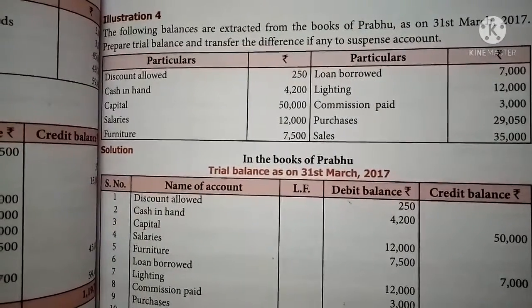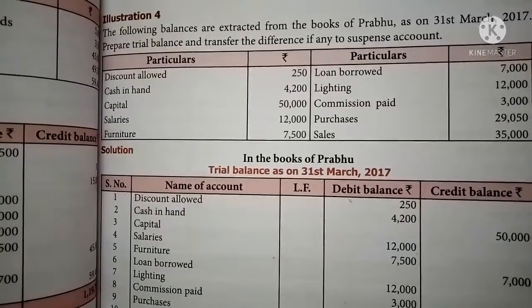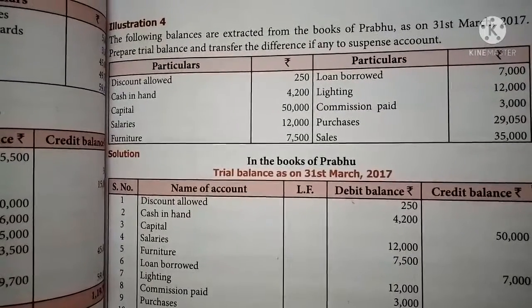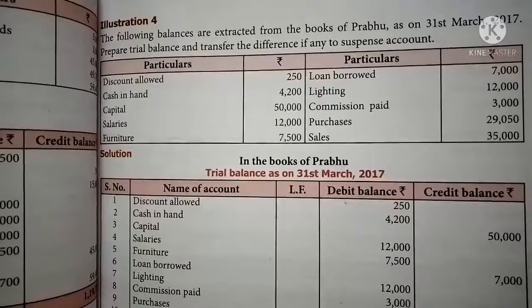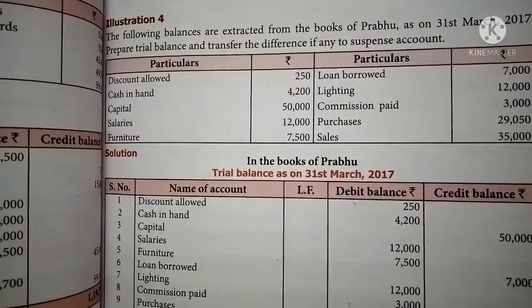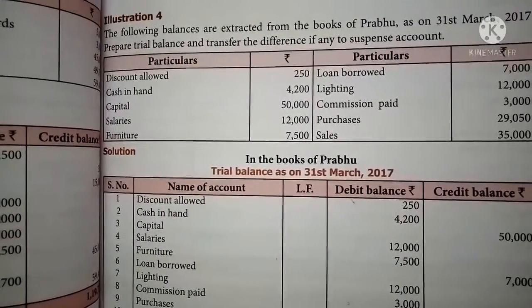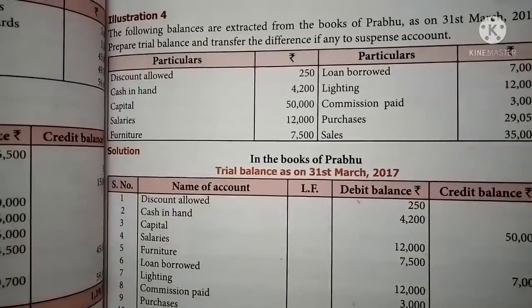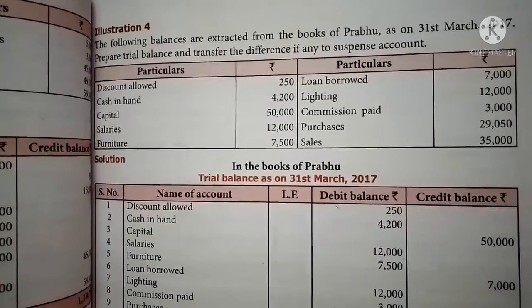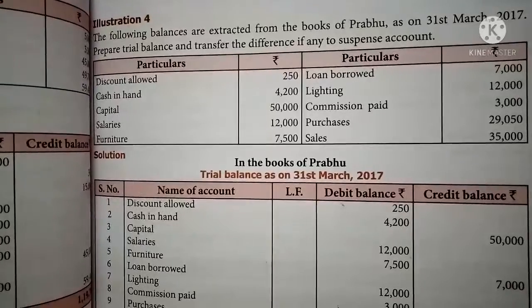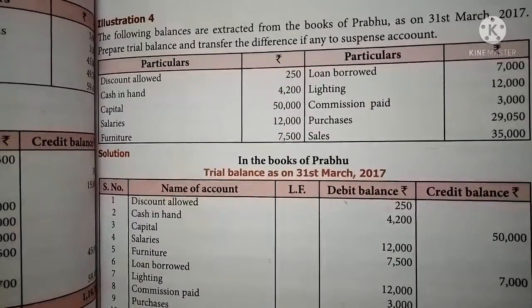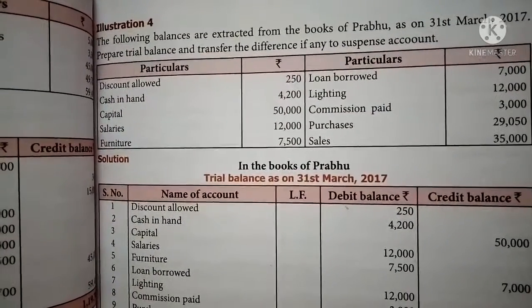In illustration four, they are asking to prepare a trial balance, and if there is any difference while preparing the trial balance, you can write the difference amount as a suspense account. The following balances are extracted from the books of Prabhu as on 31st March 2017 — prepare the trial balance and transfer the difference, if any, to the suspense account.